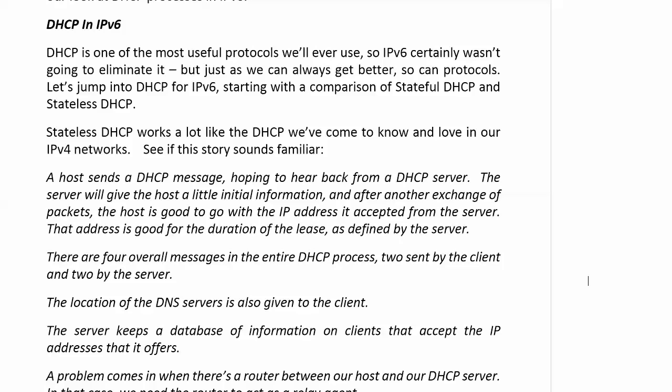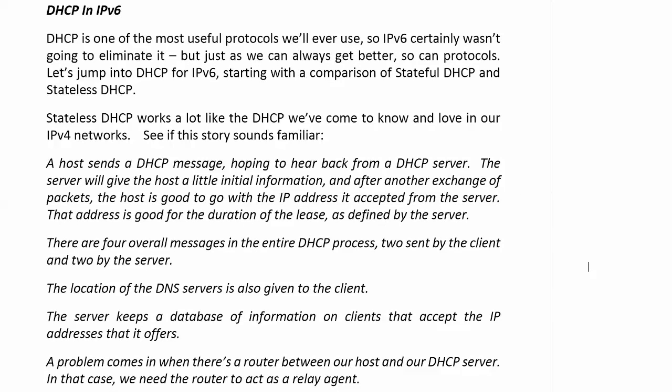A host sends a DHCP message hoping to hear back from a DHCP server. The server gives the host some initial information, and after another exchange of packets, the host is good to go with the IP address it accepted from the server. That address is good for the duration of the lease, as defined by the server itself. There are four overall messages in the entire DHCP process — two sent by the client, two sent by the server.